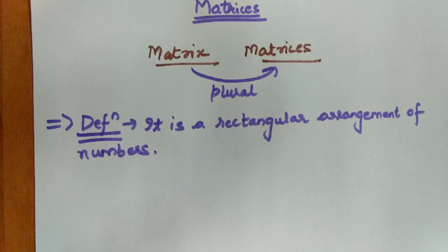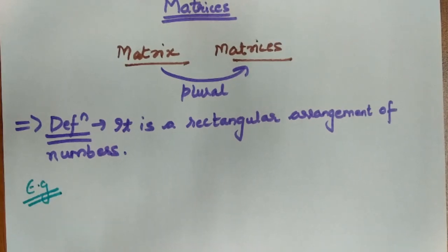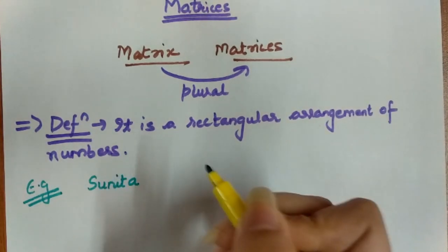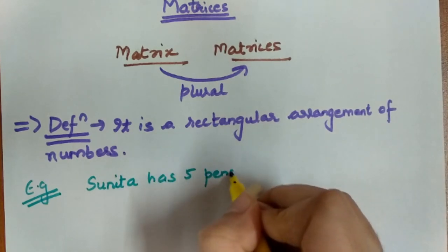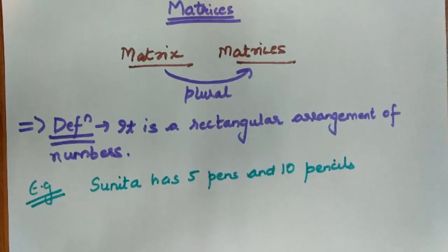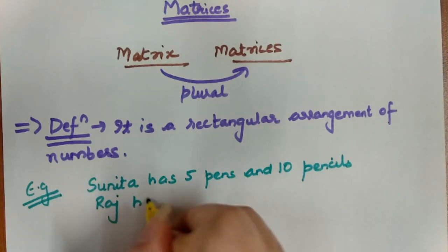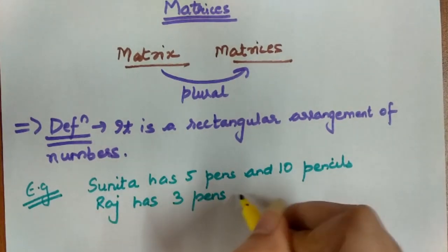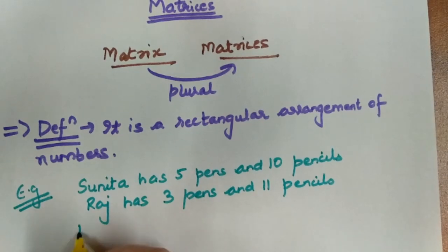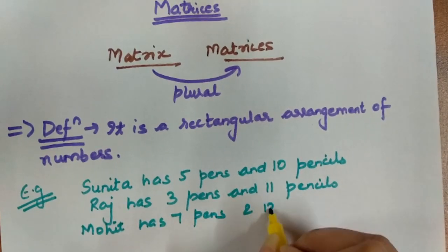I will give you an example to clarify the definition of matrix. We consider that a person is Sunita. Sunita has 5 pens and 10 pencils. We take another one — Raj. Raj has 3 pens and 11 pencils. We take a third one — Mohit. Mohit has 7 pens and 12 pencils.